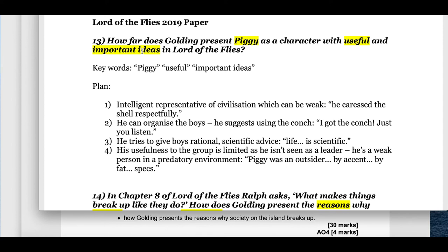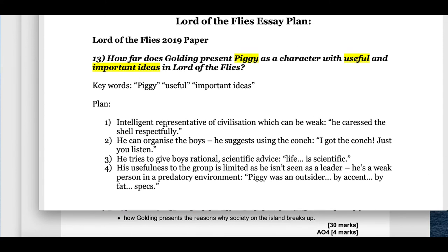For question 13 on Piggy, the key words are 'useful' and 'important ideas'. My four points: First, Piggy is an intelligent representative of civilization, which can also be weak and easily broken — quotation: 'he caressed the shell respectfully'. Second, Piggy can organize the boys and suggests using the conch for speaking — quotation: 'I've got the conch, just you listen'. Third, he tries to give boys rational, scientific advice — quotation: 'life is scientific'. Fourth, Piggy's usefulness is sadly limited as he isn't seen as a leader in a predatory environment — quotation: 'Piggy was an outsider, by accent, by fat, specs'.